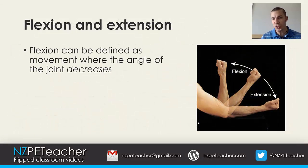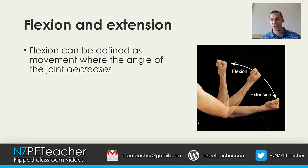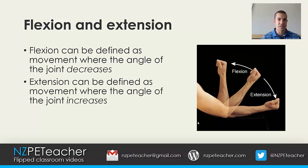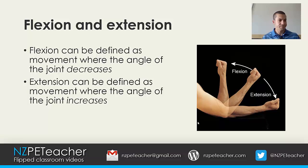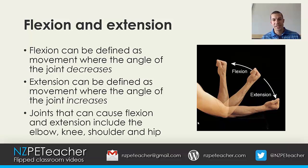Flexion can be defined as movement where the angle of the joint decreases — you can see in the image elbow flexion where the angle of the joint decreases. Extension is the opposite: movement where the angle of the joint increases. Joints that can cause flexion and extension include the elbow, knee, shoulder, and hip.